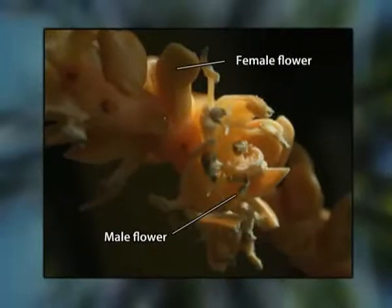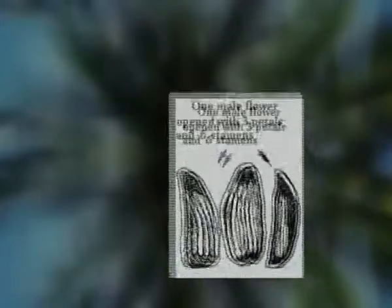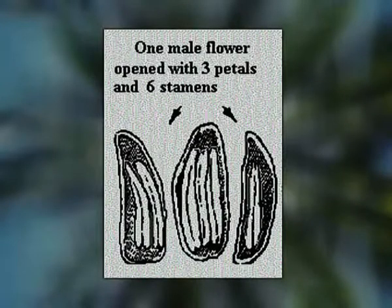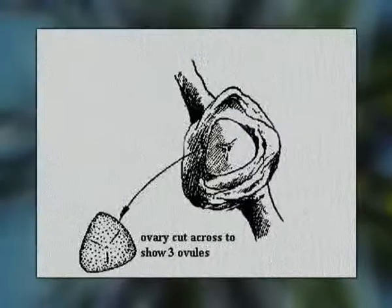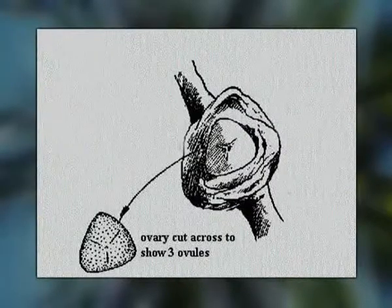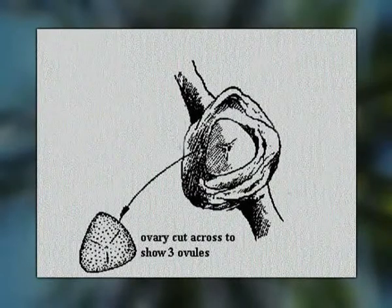Each male flower consists of a perianth of six small, unequal tepals, which are in two whorls of three each, the outer being smaller in size. The six stamens are arranged in two whorls. The gynoecium is rudimentary. The female flowers, on the other hand, consist of three fused ovaries, which are closely invested into two whorls of perianths of nearly equal size.